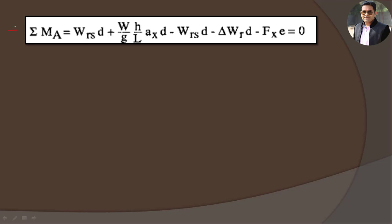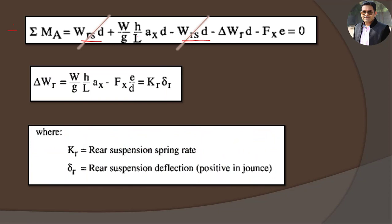This is the same equation derived in the previous slide. We observe that Wrs·D appears as both a plus and minus term, so both cancel. We then get the value of weight transfer towards the rear during acceleration: delta Wr = (W/G)·(H/L)·Ax minus Fx·(E/D). This is the main cause of the compressive force that generates power squat at the rear suspension.